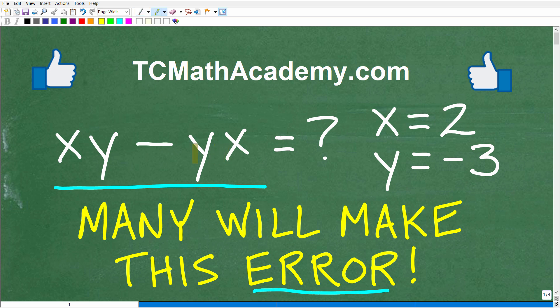Let's take a look at this problem. We have xy minus yx, and we want to evaluate this expression for these values: x equals 2 and y equals negative 3.